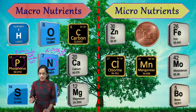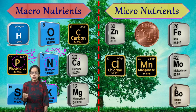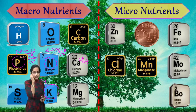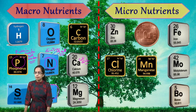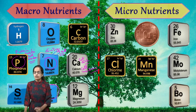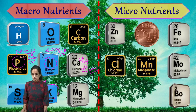The next macronutrient is calcium. Just as we require calcium for strong bones, plants require it for cell growth and cell division. Cell growth occurs once cell division takes place. Calcium is also important for the functioning of the cell membrane, similar to phosphorus. So functioning of the cell membrane and cell division are the key roles of calcium.